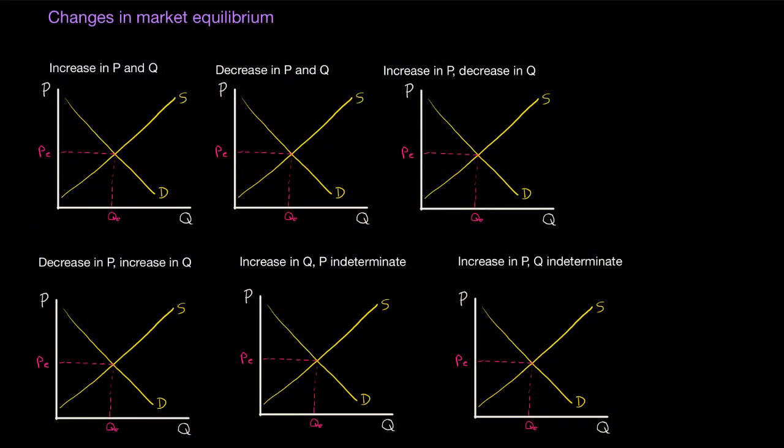In this video we're going to look at how changes in demand, changes in supply, or changes in both demand and supply can affect the equilibrium price and quantity of a good that prevails in a market. Rather than focusing on the factors that can lead to changes in demand and supply, we're going to focus primarily on the impact that a change in demand, supply, or both will have on the market equilibrium price and quantity in both the short run and in the long run following the change described.